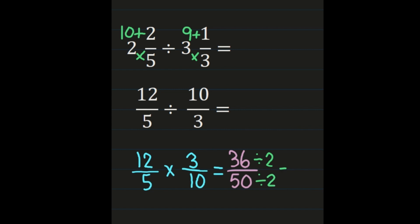36 divided by 2 is 18. 50 divided by 2 is 25. We have no more common factors, so we are finished simplifying. 18 twenty-fifths is our final answer.